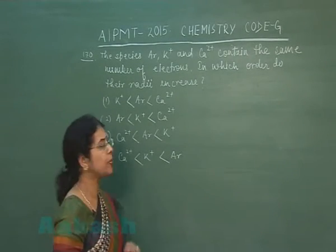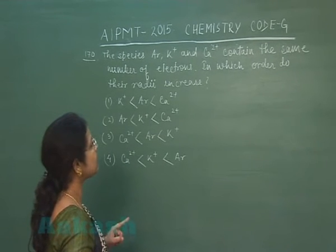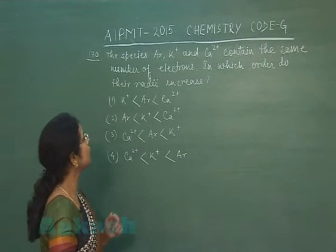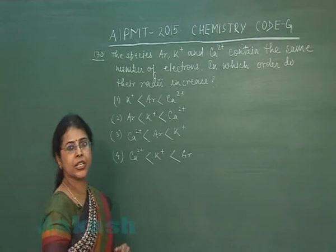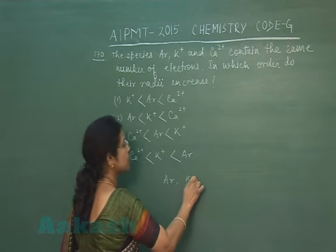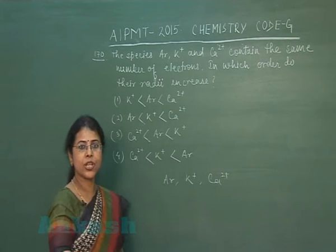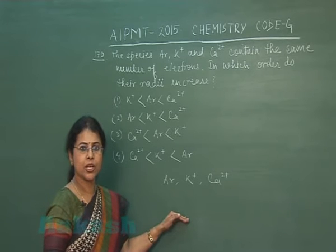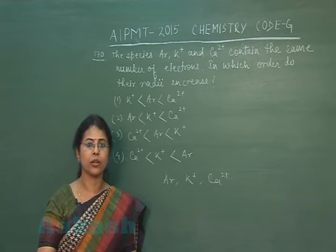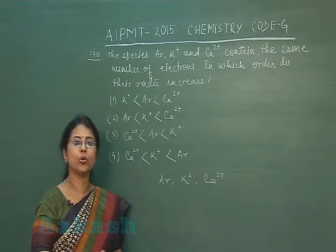Question number 170: The species Argon, K⁺, and Ca²⁺ contain the same number of electrons — in which order do their radii increase? These three species are isoelectronic, and when we compare isoelectronic species, radii is inversely related to effective nuclear charge.